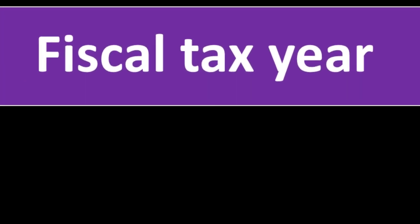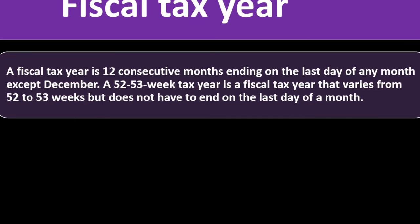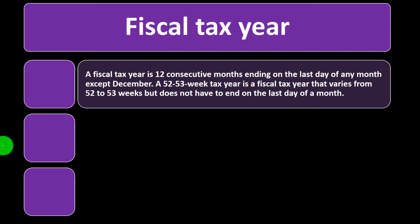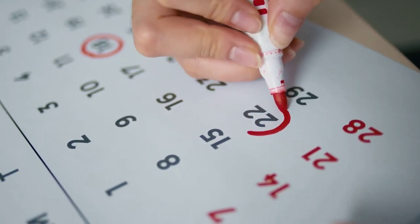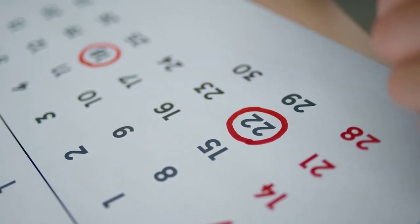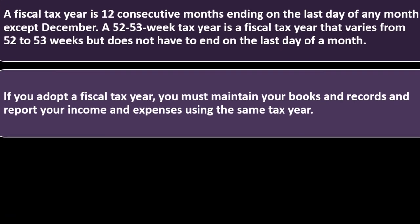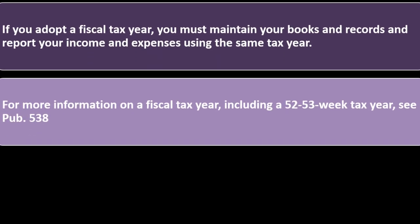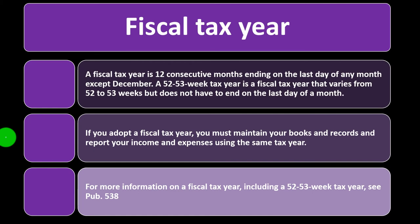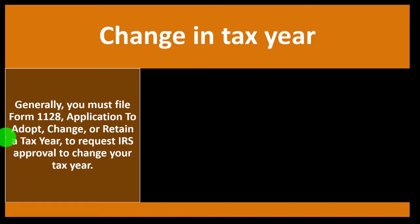A fiscal tax year is 12 consecutive months ending on the last day of any month except December. A 52-53 week tax year is a fiscal tax year that varies from 52 to 53 weeks but does not have to end on the last day of the month. If you adopt a fiscal tax year, you must maintain your books and records and report income and expenses using the same tax year. See Publication 538 on the IRS website for more information.